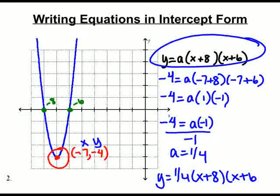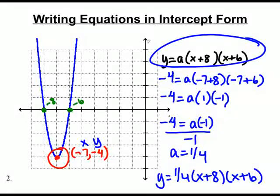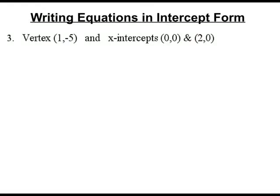Now we can do this with or without a graph. So the next one I'm going to give you looks like this. It says, let your vertex be 1, negative 5, and your x-intercepts be 0, 0, and 2, 0. Write an equation in intercept form.